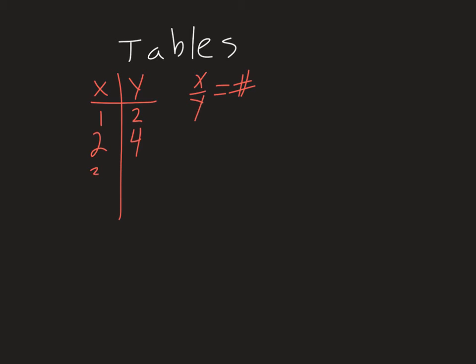So we have 1, 2; 2, 4; 3, 6; 4, 8. This ratio, 1 half is equal to 2 fourths, this is equal to 3 sixths, this is equal to 4 eighths. All of these are the same, they equal 1 half.